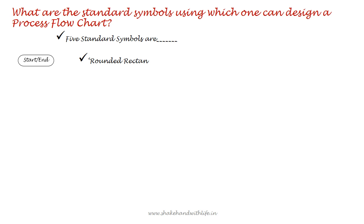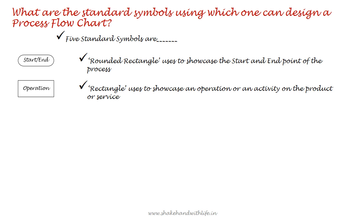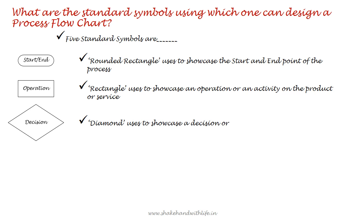A rounded rectangle is used to showcase the start and end point of the process. A rectangle is used to showcase an operation or an activity on the product or service. A diamond is used to showcase a decision or a condition, like accept or reject the product.